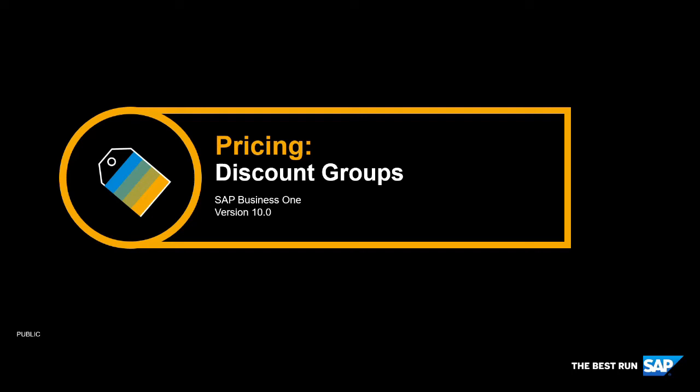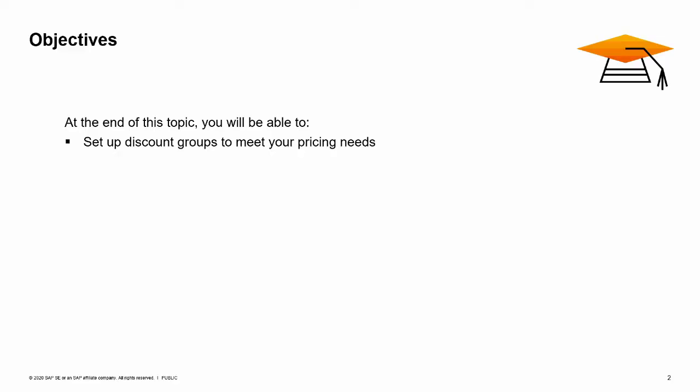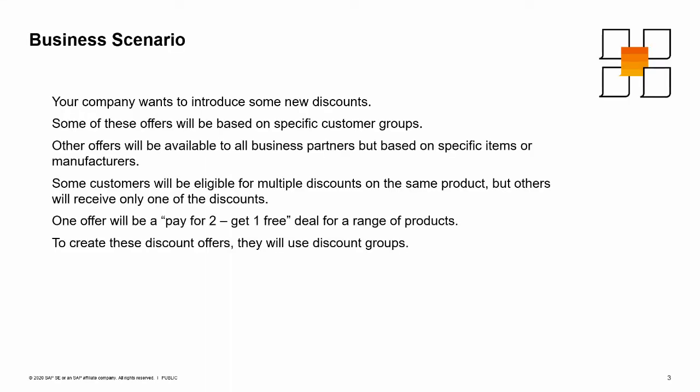Welcome to the topic on discount groups. In this topic, you will learn how to set up discount groups to meet your pricing needs. Imagine that your company wants to introduce some new discounts. Some offers will be based on specific customer groups; others will be available to all business partners but based on specific items or manufacturers. Some customers will be eligible for multiple discounts on the same product, but others will receive only one. One offer will be a pay-for-two, get-one-free deal for products such as mobile phones, ink cartridge refills, and discs. To create these discount offers, you can use discount groups.